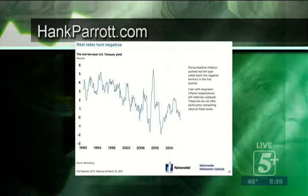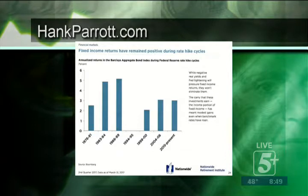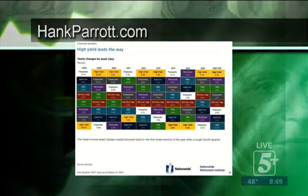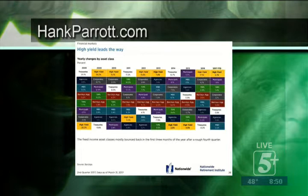Fixed income returns have remained positive during rate-hike cycles. While negative real yields and Fed tightening will pressure fixed income returns, they won't eliminate them. Corporate spreads continue to tighten. In 2016, high-yield bonds returned 17%, and investment-grade corporates about 6%. In 2017 year-to-date, high yields are up 2.7%. However, in 2015, high-yield bonds were at negative 4.5%, and high-grade corporates at 2.5% in 2014 — so caution is warranted.